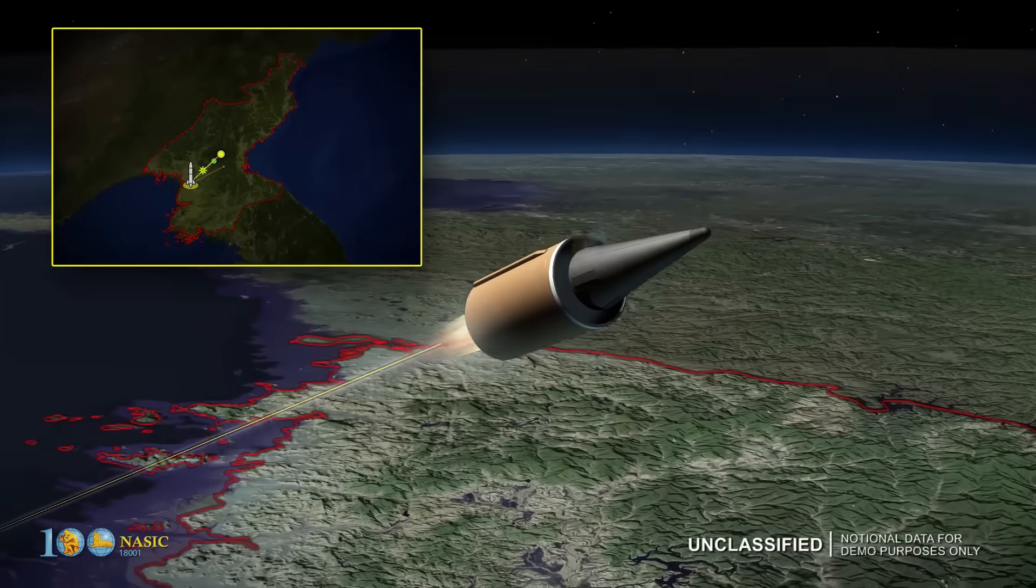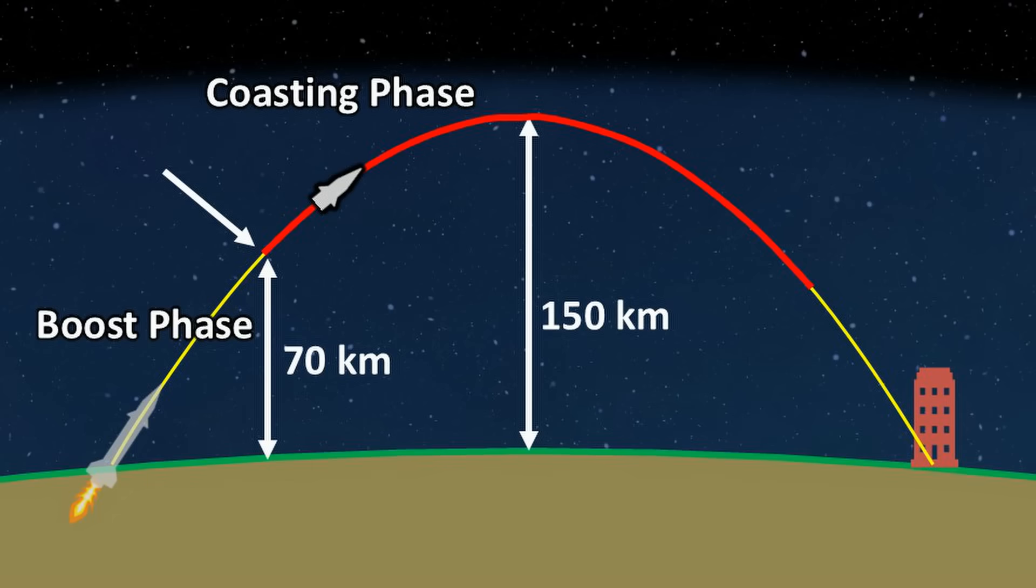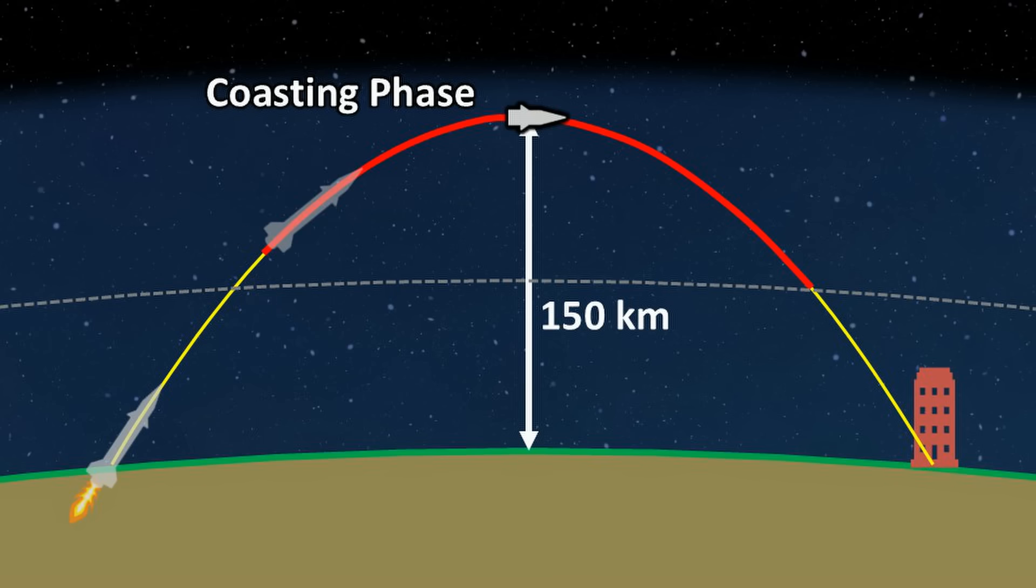After this phase, the rocket booster part of the missile is jettisoned. The next phase of the missile is called the coasting phase. This is the phase where the missile travels without any propulsion. Since the density of the Earth's atmosphere above 50 kilometers is very low, there is much less air resistance. With the speed and kinetic energy gained during the boost phase, the missile can reach an altitude of around 150 kilometers.